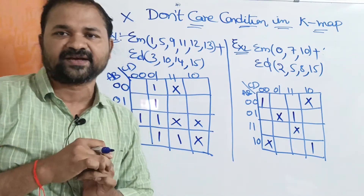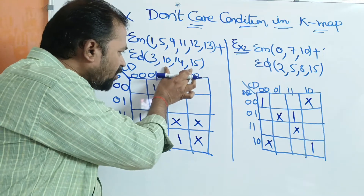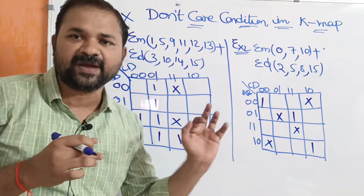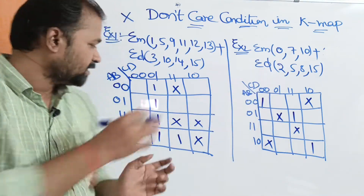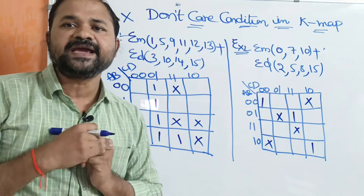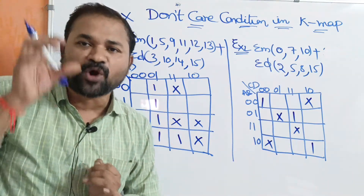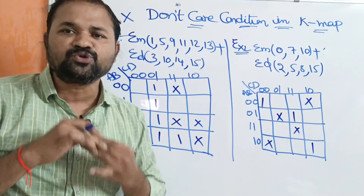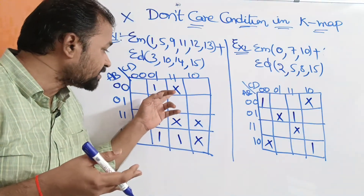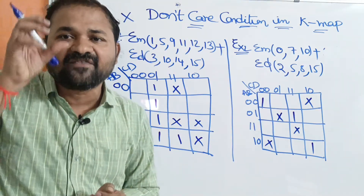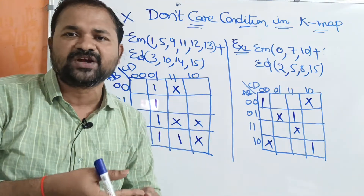The output may be either 0 or 1. So we have written X in the Karnaugh map table for minterms 3, 10, 14, and 15. Now we have to group these cells. We know that we have to cover all the ones, but for don't cares, it is not necessary to cover all of them. We may cover some don't cares and we may not cover some. If we cover a don't care, then its value is 1; if we don't cover it, its value is 0.